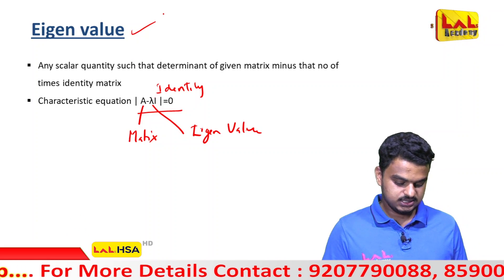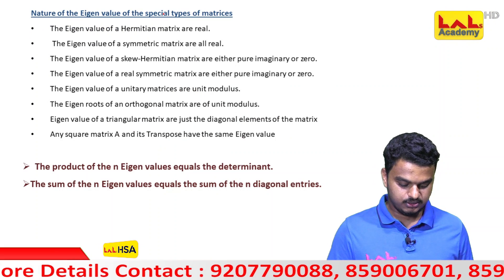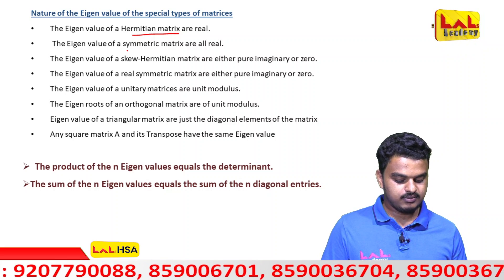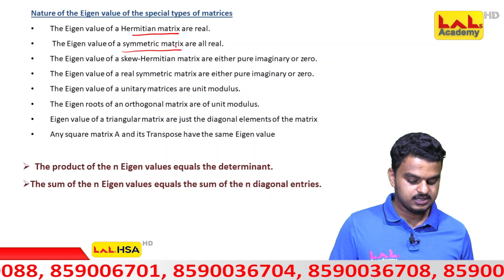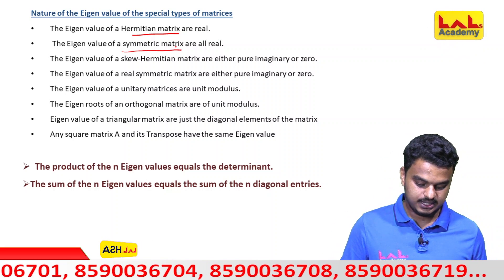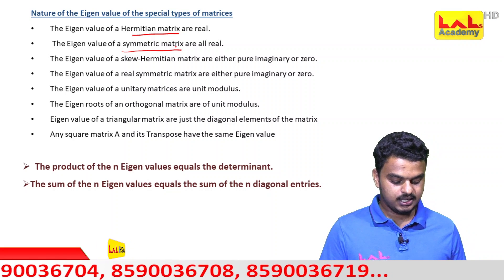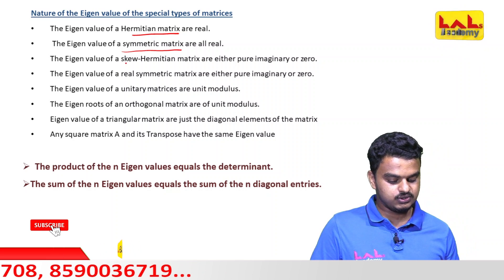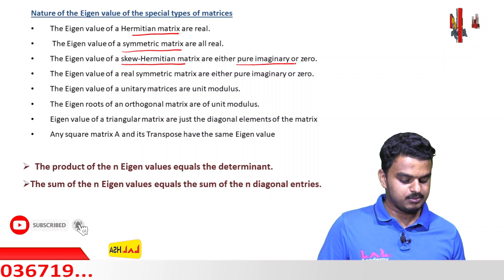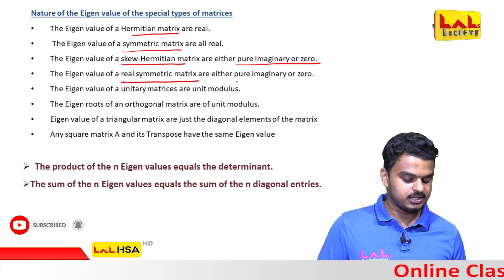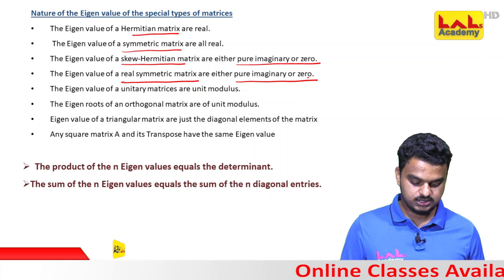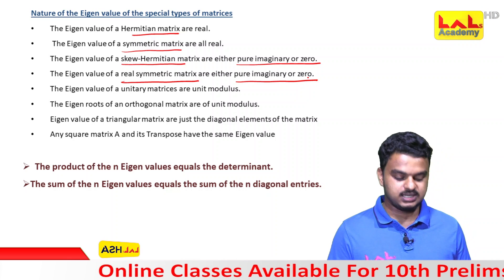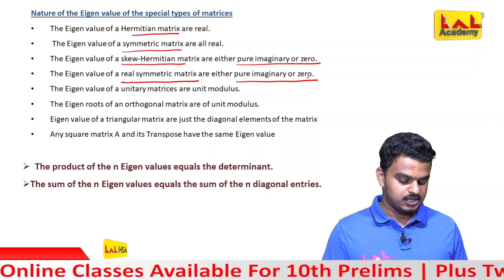The eigenvalues of a Hermitian matrix are real. The eigenvalues of a skew-symmetric matrix are either pure imaginary or zero. For a real symmetric matrix, the eigenvalues are real.